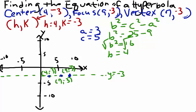Because our transverse axis is parallel to x, our equation takes the form (x - h)² / a² - (y - k)² / b² equals 1.